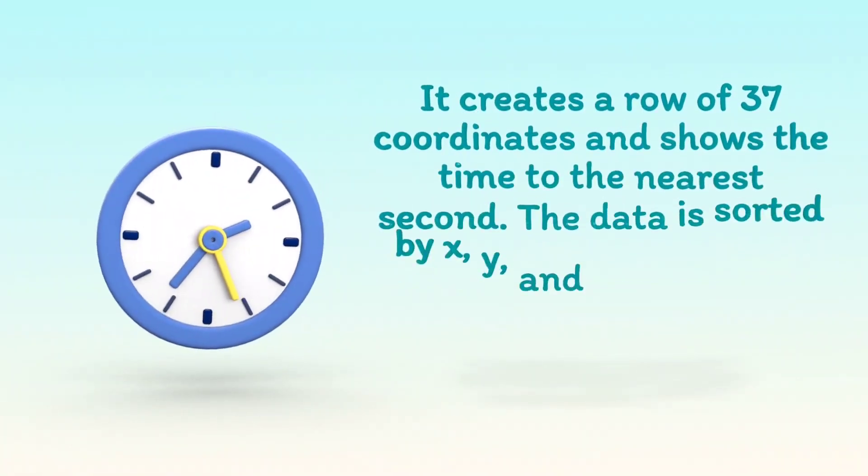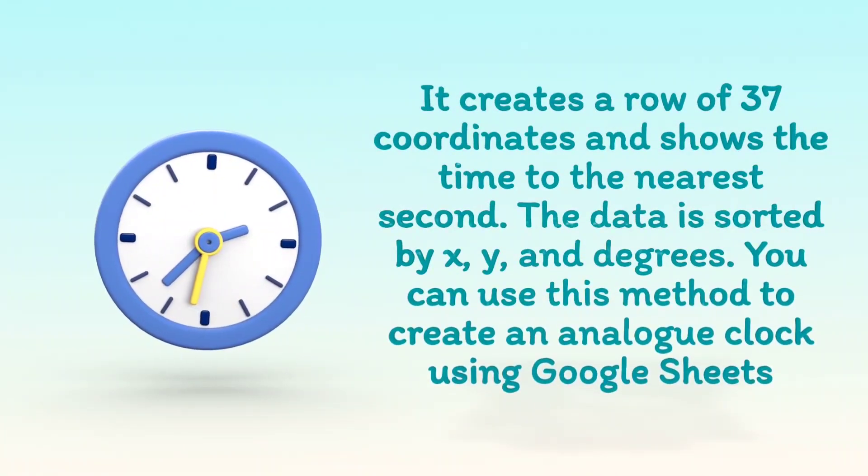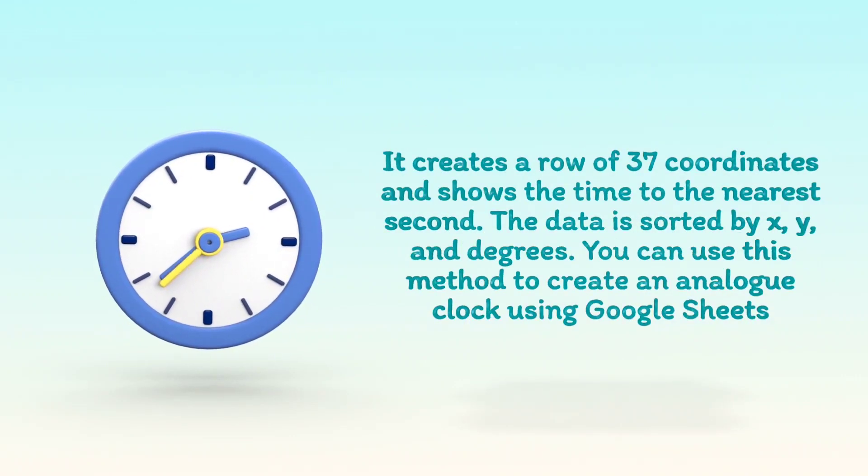It creates a row of 37 coordinates and shows the time to the nearest second. The data is sorted by x, y, and degrees. You can use this method to create an analog clock using Google Sheets.